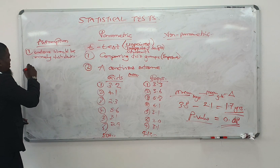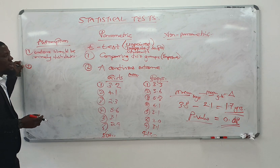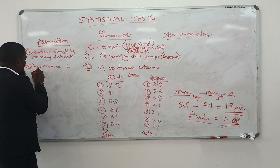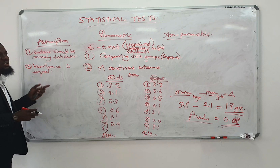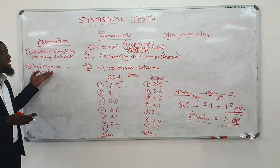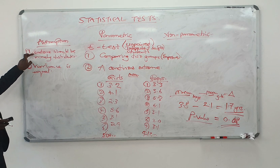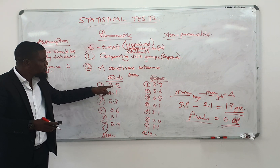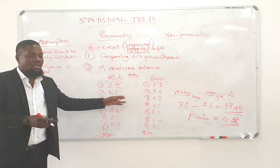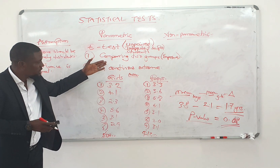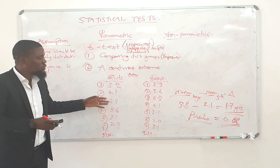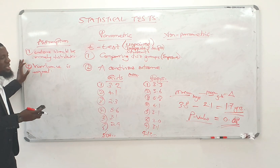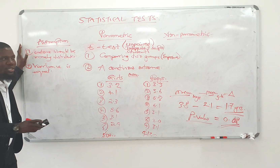There are other assumptions you have to think of, one of which is that the variance is equal. This is actually compared to the assumption of homoscedasticity. The difference between the observed values and the mean should be equal between the two groups you are comparing. So the variance in both groups is supposed to be equal, and both will also be normally distributed. It still speaks about the issue of having extreme values.